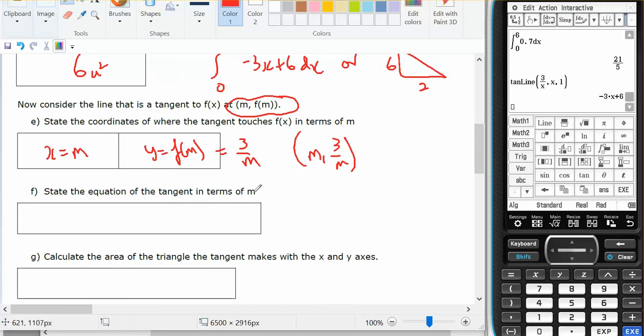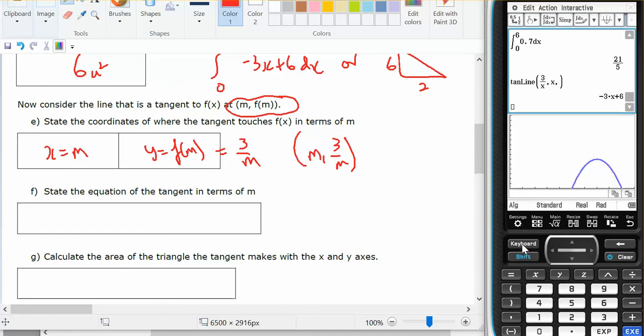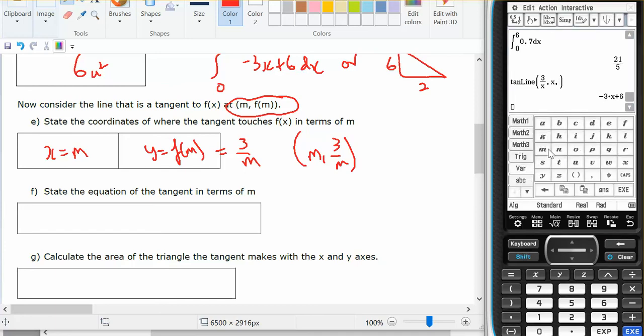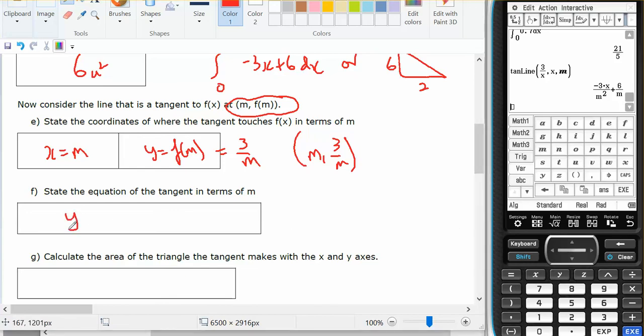So the equation of the tangent in terms of m. I'm now going to put the tangent at the coordinate m, and that gives me an equation which is y of the tangent at m, which is minus 3x on m squared plus 6 on m.